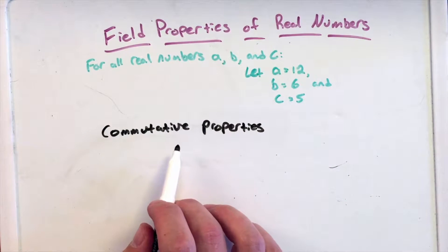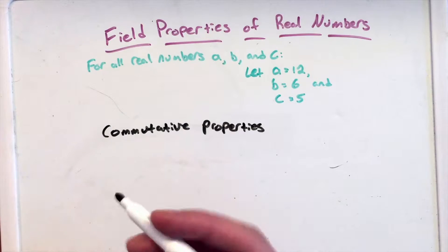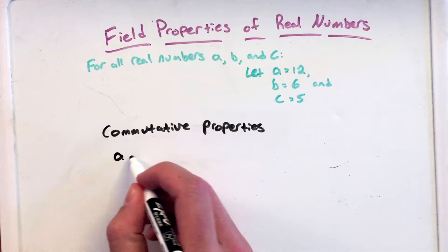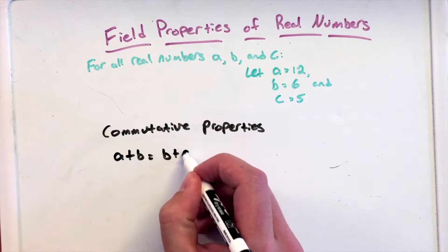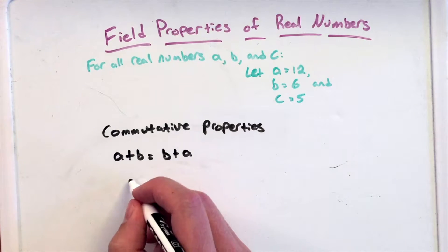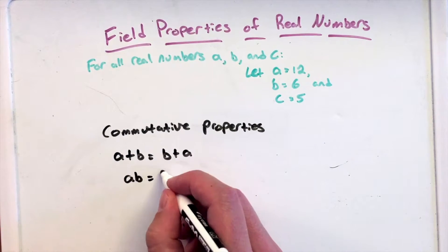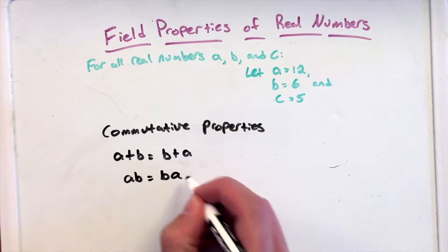So the commutative properties here, we have A plus B equals B plus A with addition, as well as A times B equals B times A.